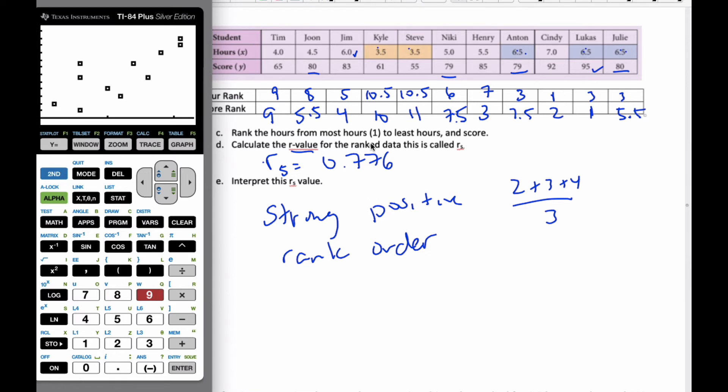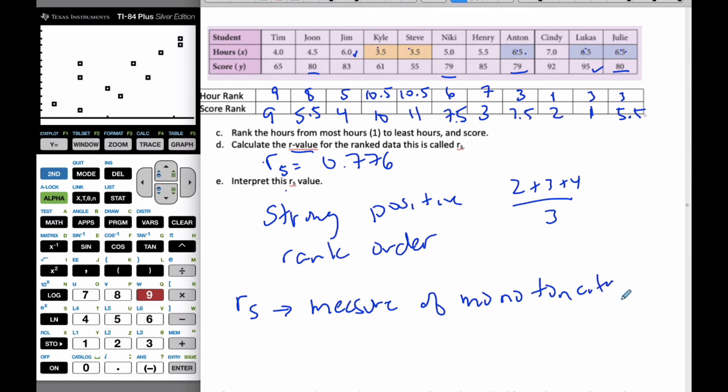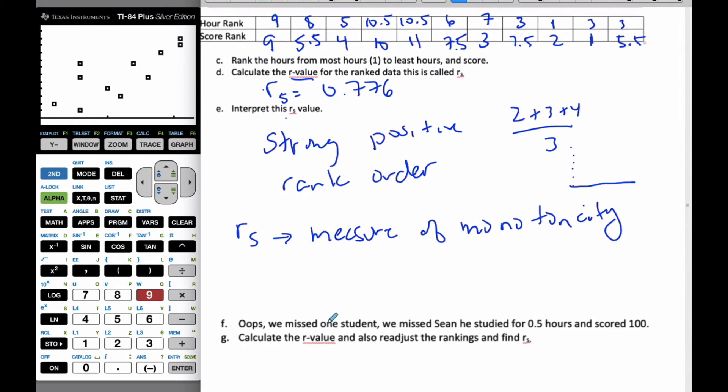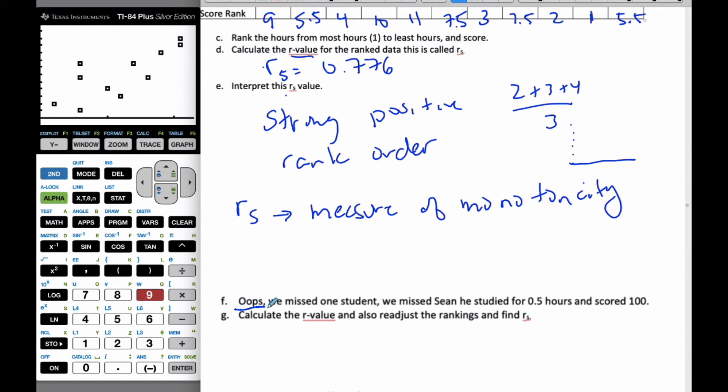What the Spearman's rank does, R sub S, it is a measure of monotonicity. Which means as the X values go up, so do the Y values. Or if it's negative, as the X values go up, the Y values go down. The values don't matter, it's where they are ranked. That is what monotonicity tells us. It tells us how much it is consistently increasing or decreasing.